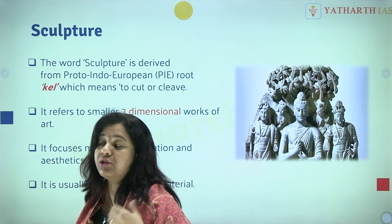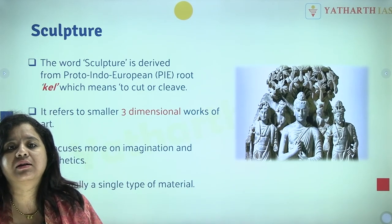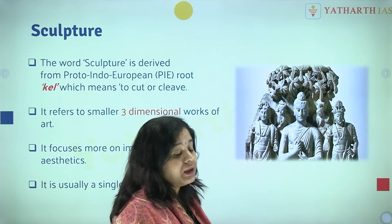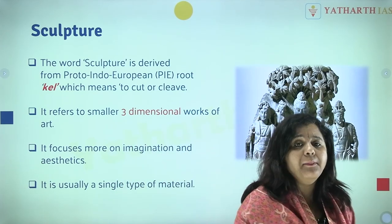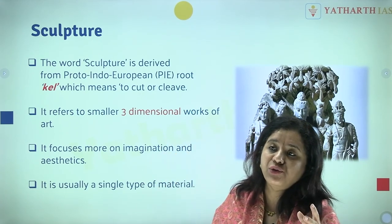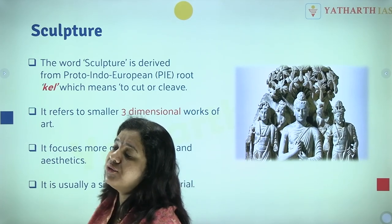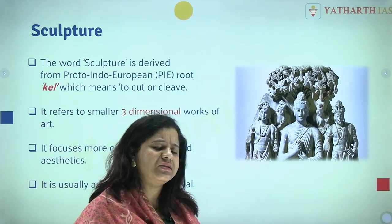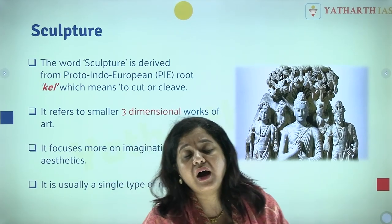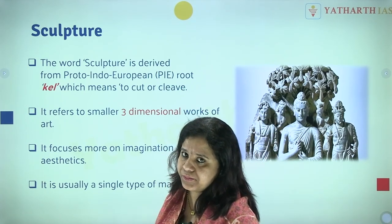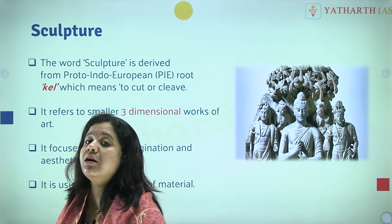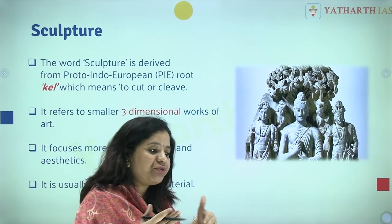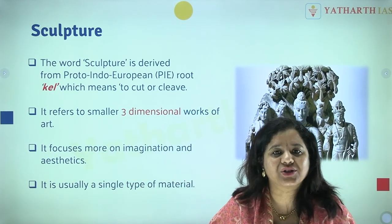For buildings or monuments in architecture, a combination of materials is used. There are exceptions — the Kailasa Temple at Ellora and the Shravanabelagola sculpture in Karnataka are architectural marvels constructed from only one material. I hope you understand the difference between architecture and sculpture.